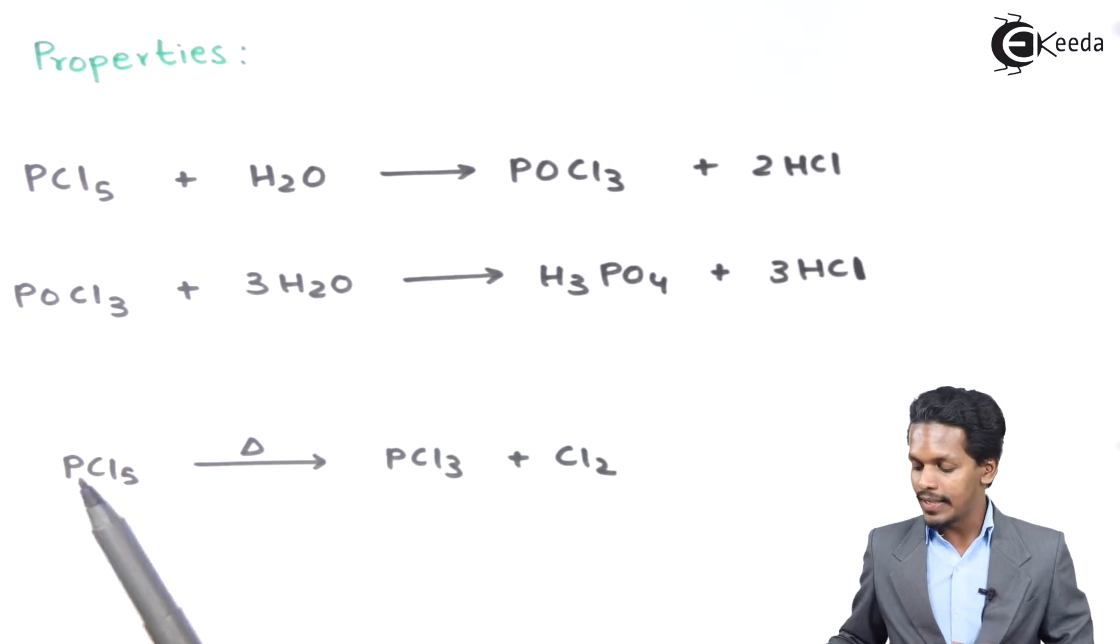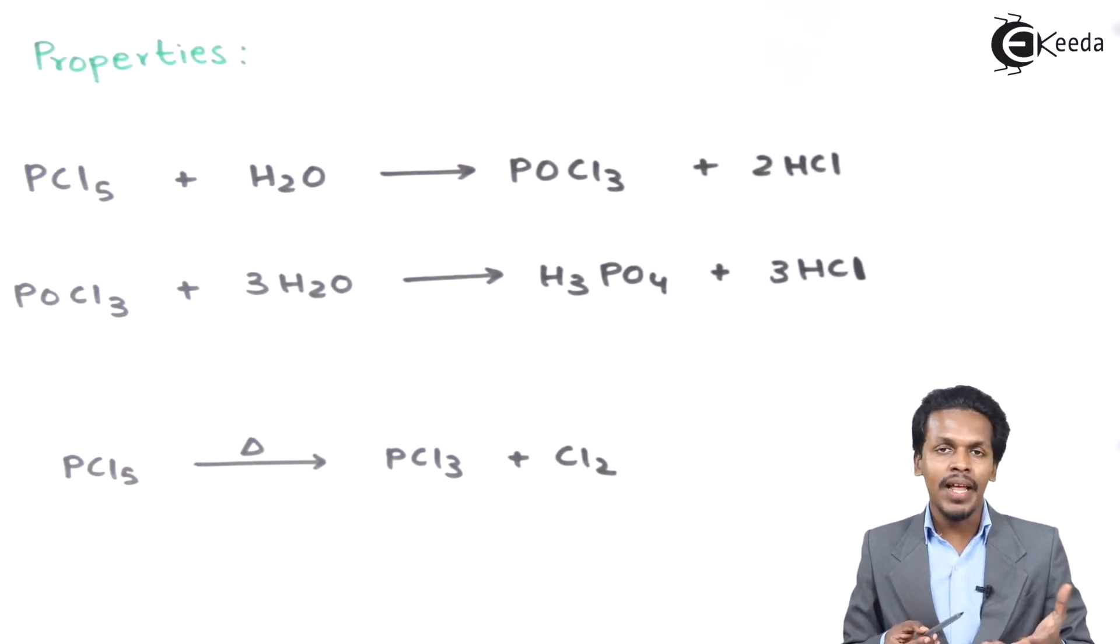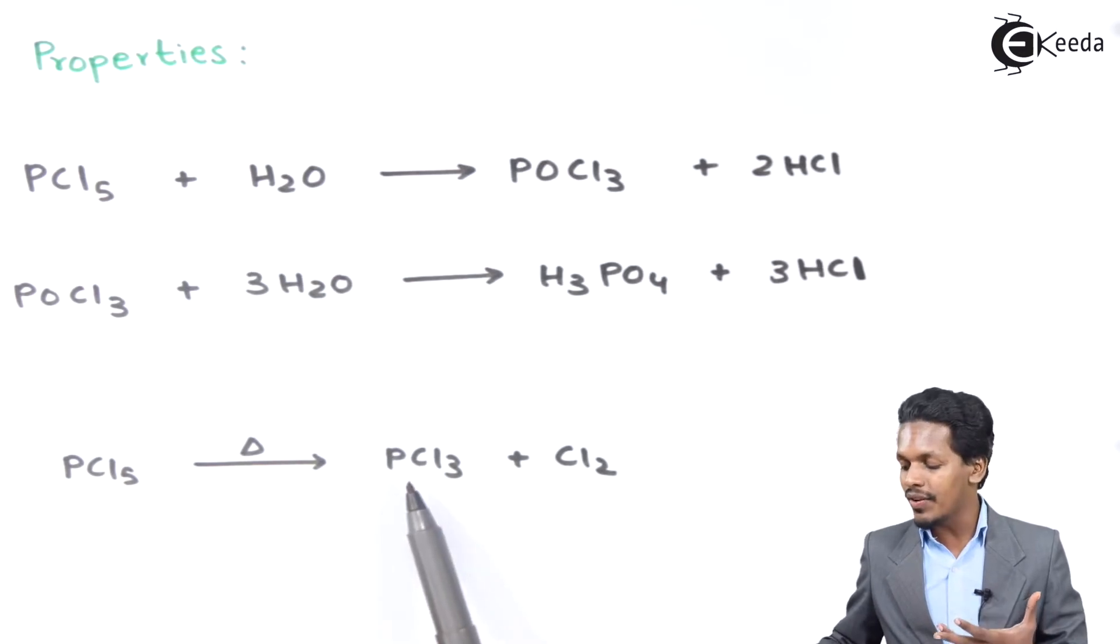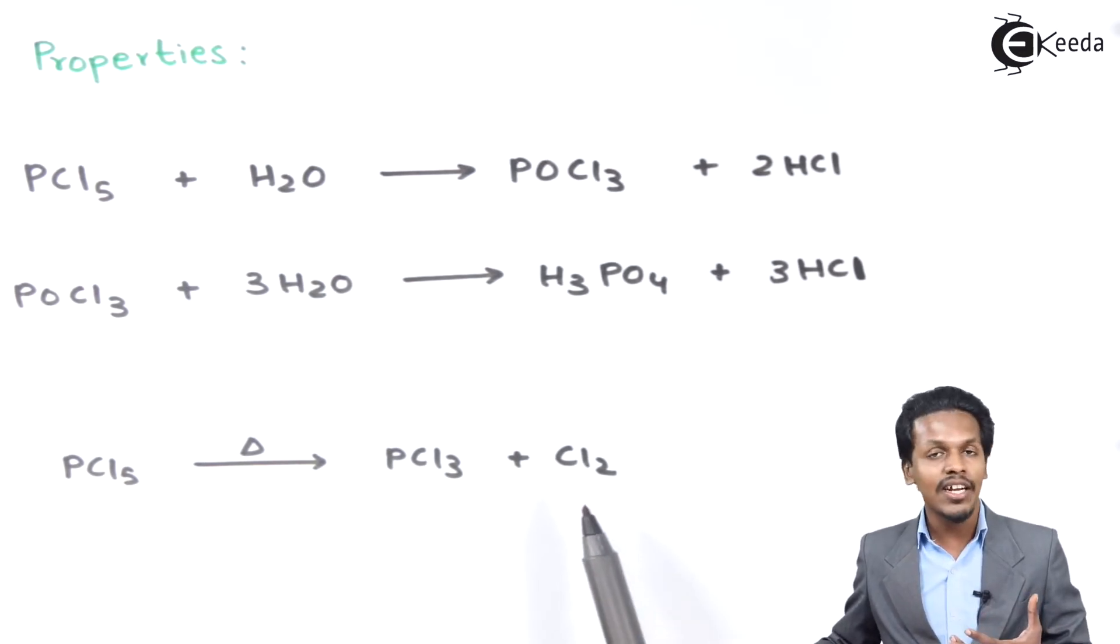Now the next one: PCl5 sublimes at 373 Kelvin, that is below 373 Kelvin. But if we strongly heat it, this PCl5 will be converted into PCl3 and Cl2.